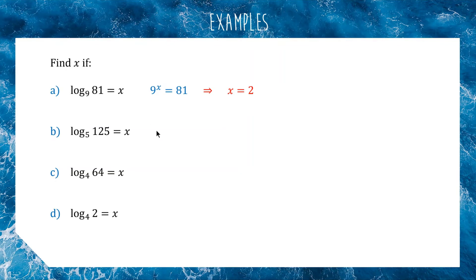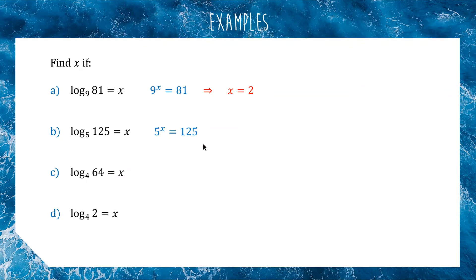We've got log base 5 of 125 equals x. Once again we'll use our trick to write it as an exponential equation: 5 to the power of x equals 125. This to the this equals this. Now, 125 is 5 cubed, so x equals 3.